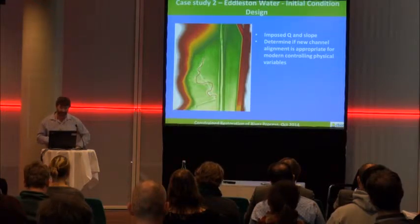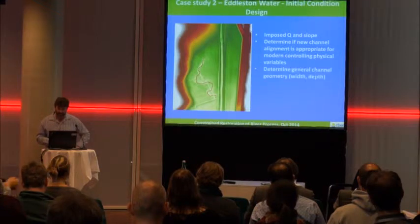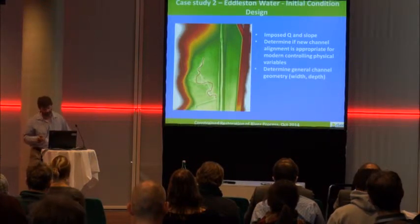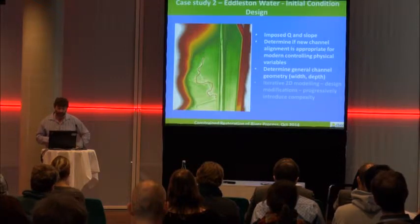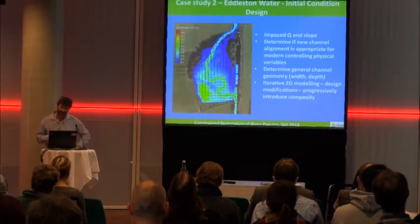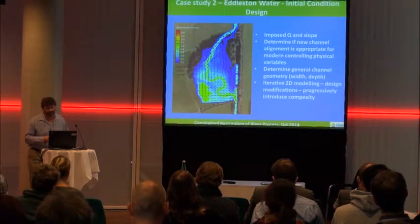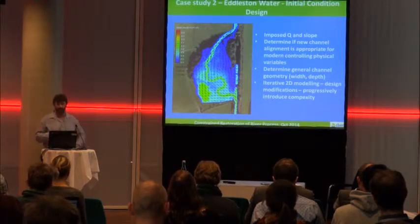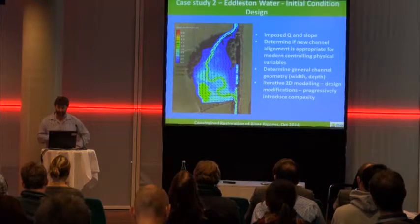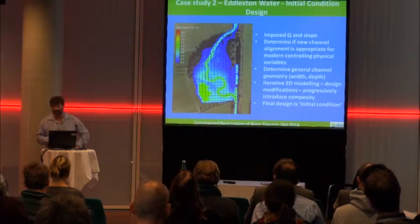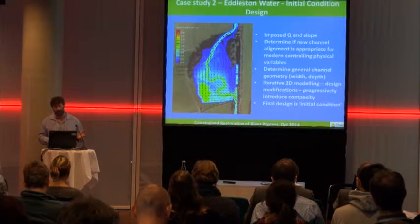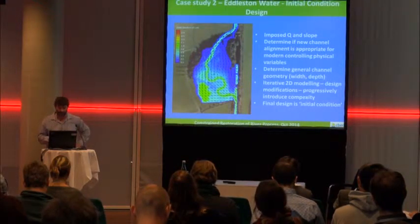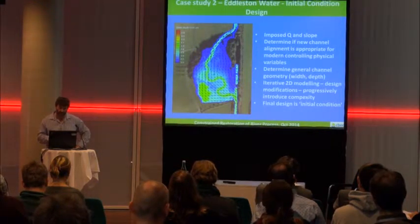The next stage is to determine general channel geometry. Using geomorphic regime or threshold relationships, we came up with a simple channel geometry in terms of width and depth. Then we go through an iterative 2D modelling process - starting with this very simple channel geometry and alignment, and gradually adding in complexities. This is our best guess that we supply to the river, assuming it's at a position where it would be close to stable when operational, but the river will adjust it to reach its dynamic equilibrium stage.